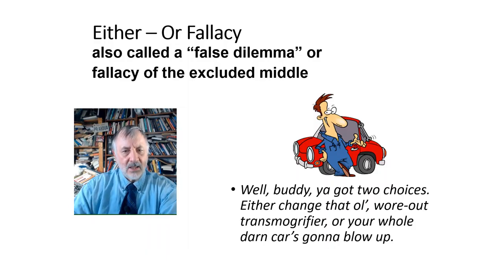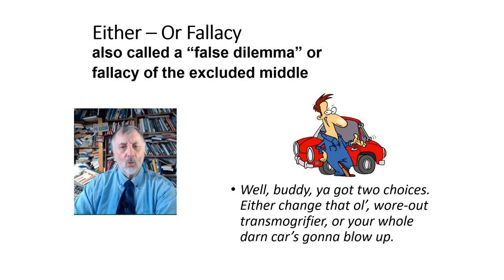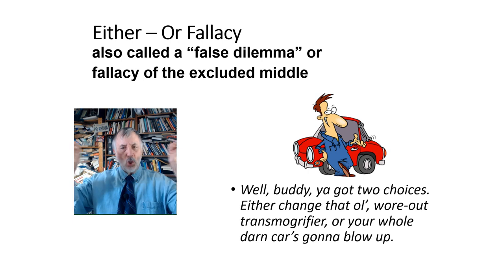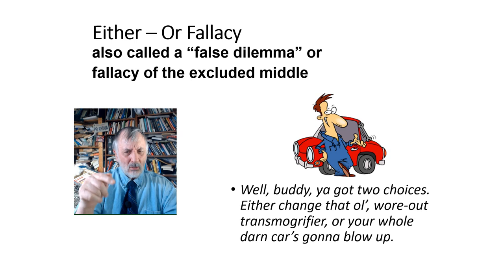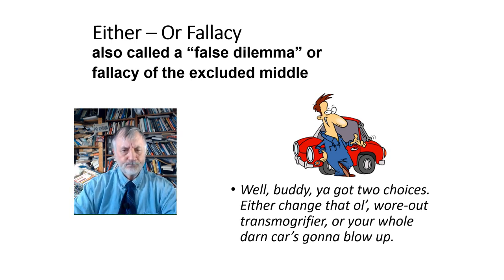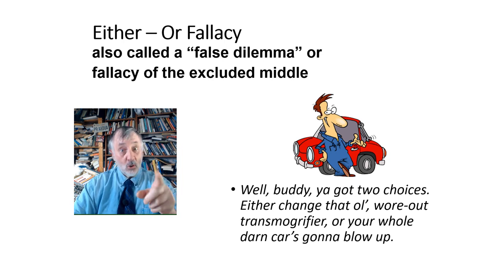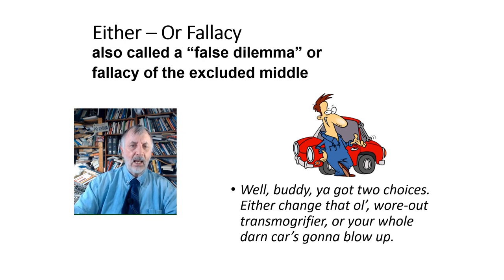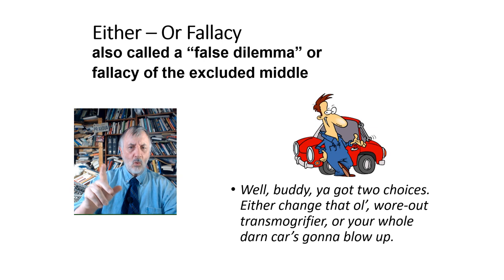Another fallacy is the either/or fallacy — sometimes called the false dilemma or the fallacy of the excluded middle. What this means is there's no middle ground. You might think of it as 'my way or the highway' — but no, there are lots of other roads you can take. This is when somebody presents an argument that it can only be one thing or another.